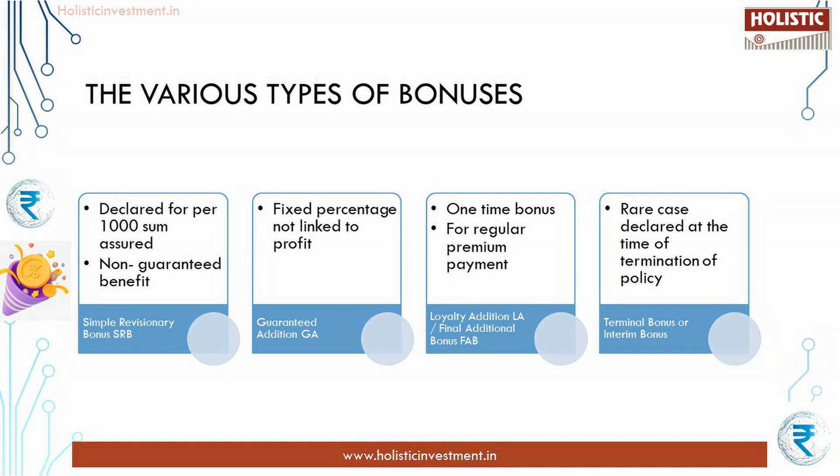Now let's see the various types of bonuses. The first is Simple Reversionary Bonus, or SRB. It is declared per thousand sum assured. For example, rupees 25 per thousand sum assured. So if you have a sum assured of rupees 10 lakh, then the SRB is 25,000. This bonus is simply accumulated each year and finally paid at maturity or along with the death benefit. In most cases it is simply added to the basic sum assured and paid finally without compounding.